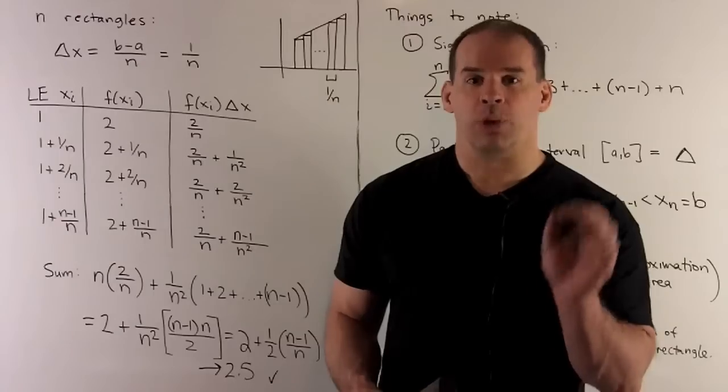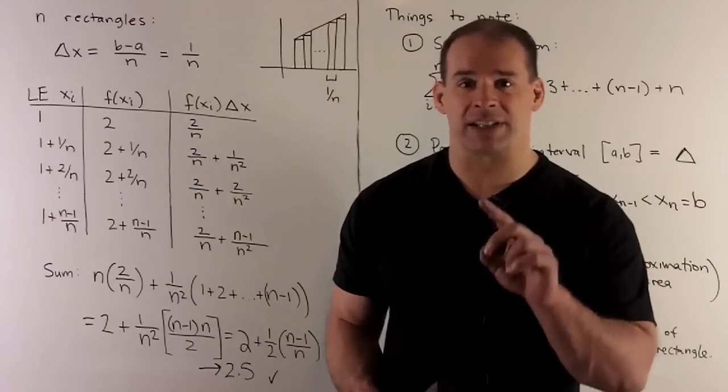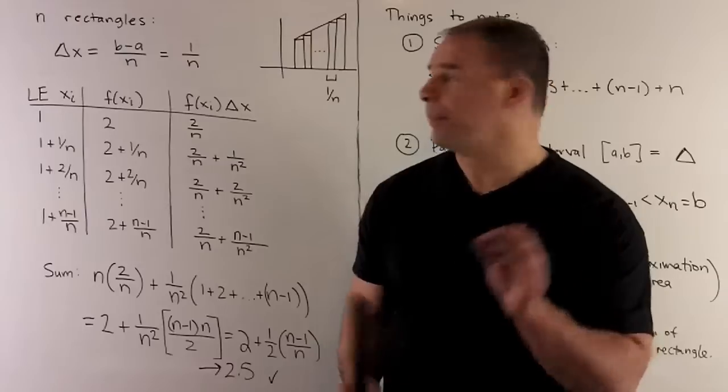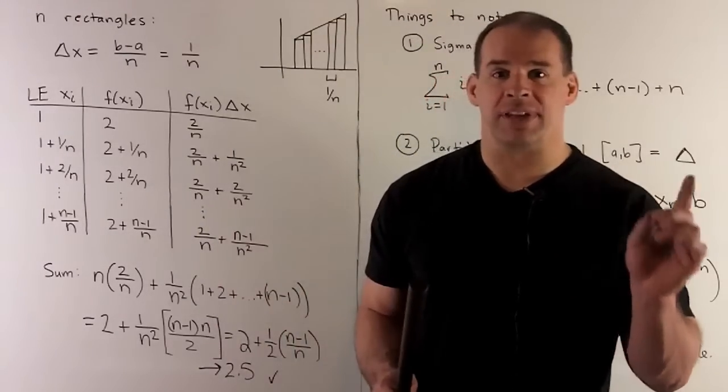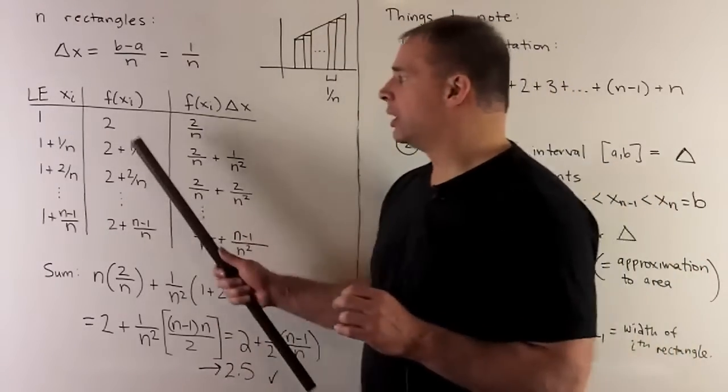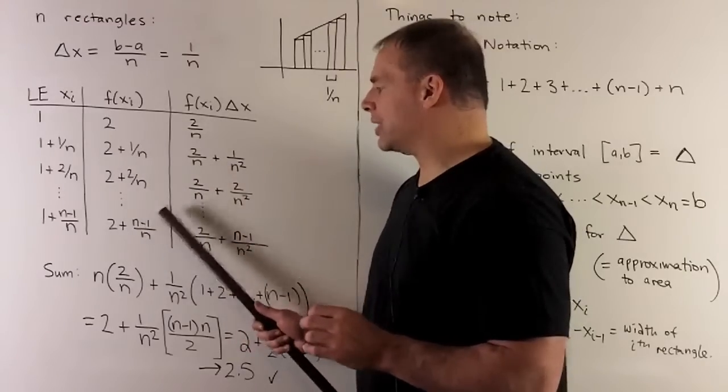Next step, we apply our function to our left endpoints to get the height of each rectangle. So, if I do that, it's the same as adding 1 to each left endpoint. So, we'll have 2, 2 + 1/n, 2 + 2/n, 2 + (n-1)/n.